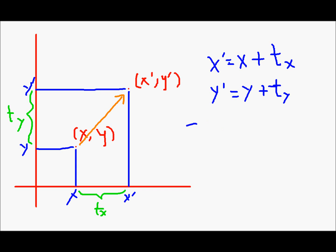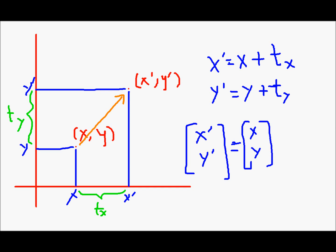In matrix form, the matrix for the new coordinates x', y' is equal to the matrix for the old coordinates x and y, plus the matrix with the translation factors tx and ty. So this was translation — we translated x, y to x', y'.